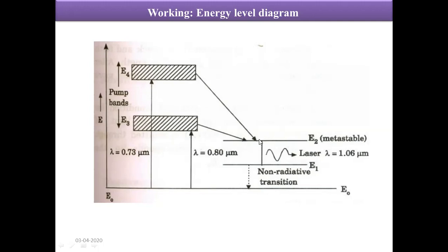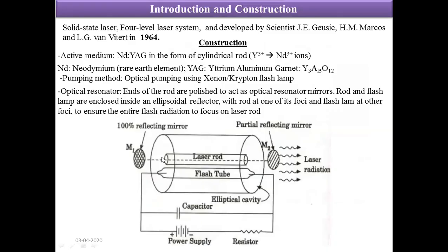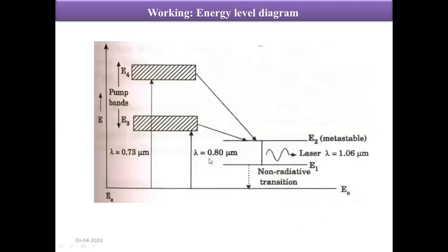The transition from the E2 level to the E1 level is a stimulated process. During this process, a stimulated photon is generated with a wavelength of 1.06 micron. Photons travelling parallel to the resonator axis — the paraxial photons — experience multiple reflections at the mirrors. As a result, the transitions from E2 to E1 are very intense and coherent, and we get a pulsed output.